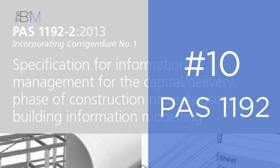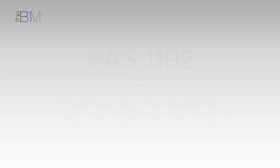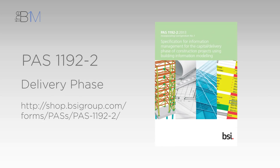At number 10 it's PAS 1192. This is Publicly Available Specification number 1192, published by the British Standards Institution. There are five parts to it, with parts two to five each describing a different aspect of BIM level two. The key part is PAS 1192-2, which sets out how to deliver a project through a BIM process. It's a free download from this link.